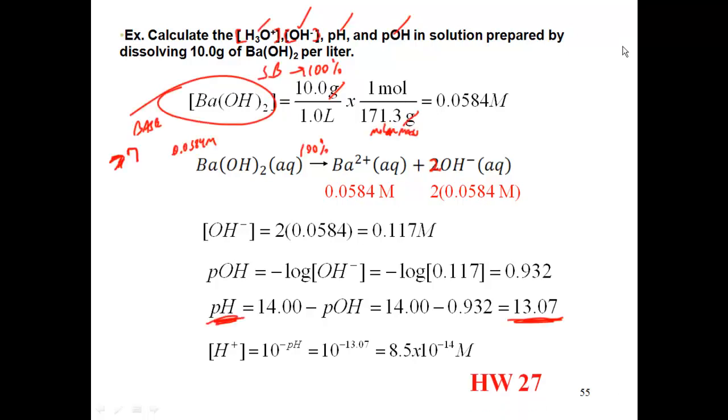Homework, 27. That deals with calculating the pH of strong acids and strong bases. Now, realize this is the start of calculating pH. This is the easy part. This is where we're basically walking. When we get to the next section, we'll be running because we're going to have to do calculations of Ka, Kb to figure out the concentration of hydronium hydroxide, and then figure out the pH. These are a little bit easier because they're strong, so we can figure out the concentration of OH- or hydronium ion directly from the concentration of the acid or base given.